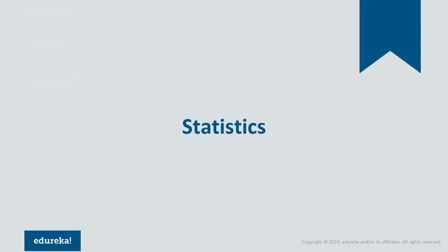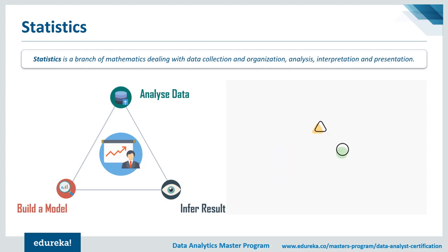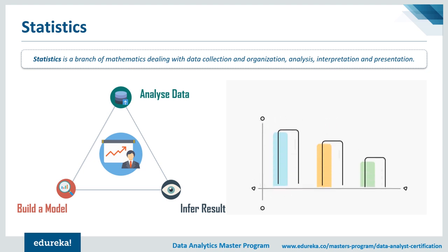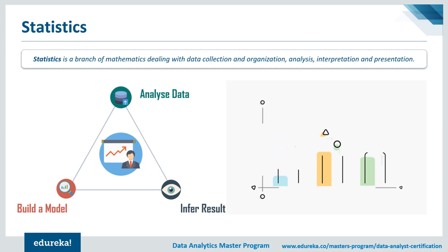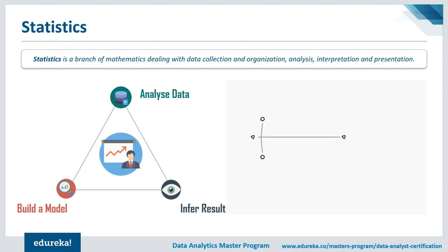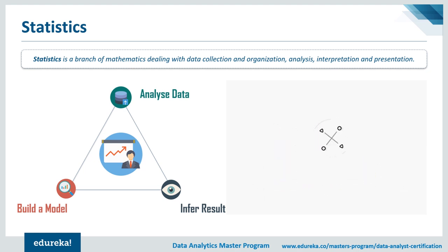Starting with statistics — statistics is a mathematical science pertaining to data collection, analysis, interpretation, and presentation. It is used to process complex problems in the real world so that analysts can look for meaningful trends and changes. Analysts review data to reach conclusions, and several statistical functions, principles, and algorithms are implemented to analyze raw data, build a statistical model, and infer or predict results. In short, statistics is a branch of mathematics dealing with data collection, organization, analysis, interpretation, and presentation.